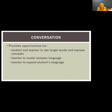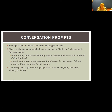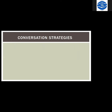Another component of the intervention is conversation, which provides opportunities for students and the teacher to use the target words and express new concepts. It gives the teacher an opportunity to model complex language and expand the student's language. The prompt should elicit use of the target word — open-ended questions or 'tell me' statements. For example: 'In the book, how could Swimmy make friends with an urchin without getting poked?' or 'I went to the beach last weekend and swam in the ocean — tell me about a time you went to the ocean.' It's helpful to have a prop like an object, picture, or book.